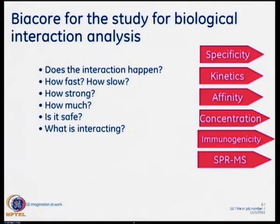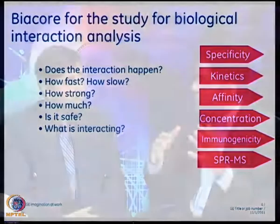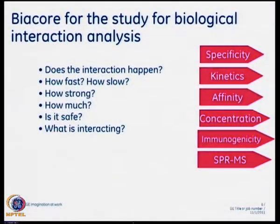Here on my PPT is a simple analysis of different things that can be done with Biacore — six applications. When studying an interaction A plus B gives AB, the questions you ask are: first, does the interaction happen or not? Second, how fast is the association or how slow is the dissociation? Third, how strong is the interaction — what is the affinity? Fourth, how much of the analyte is there — what is its concentration? Fifth, in the drug industry, is this interaction a safe interaction or not? And sixth, if you have a heterogeneous analyte and binding is happening, what specifically is binding? Identifying the very specific interactor is the most challenging aspect, because that is where many times people discover false interactors.